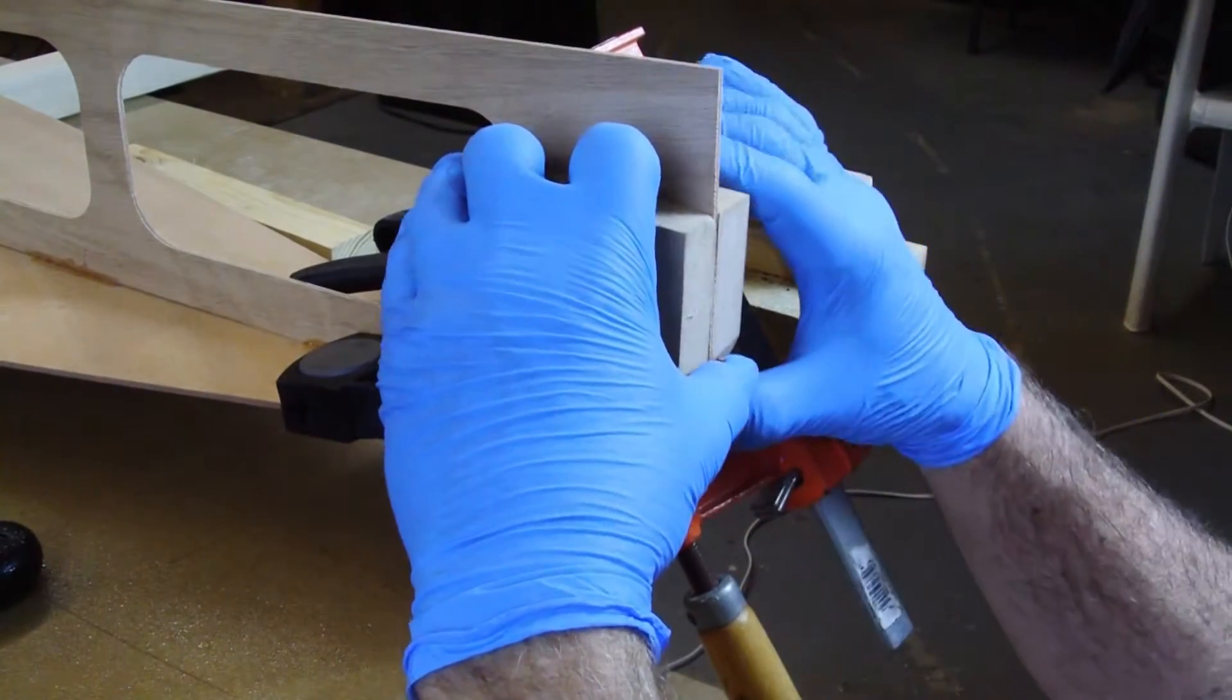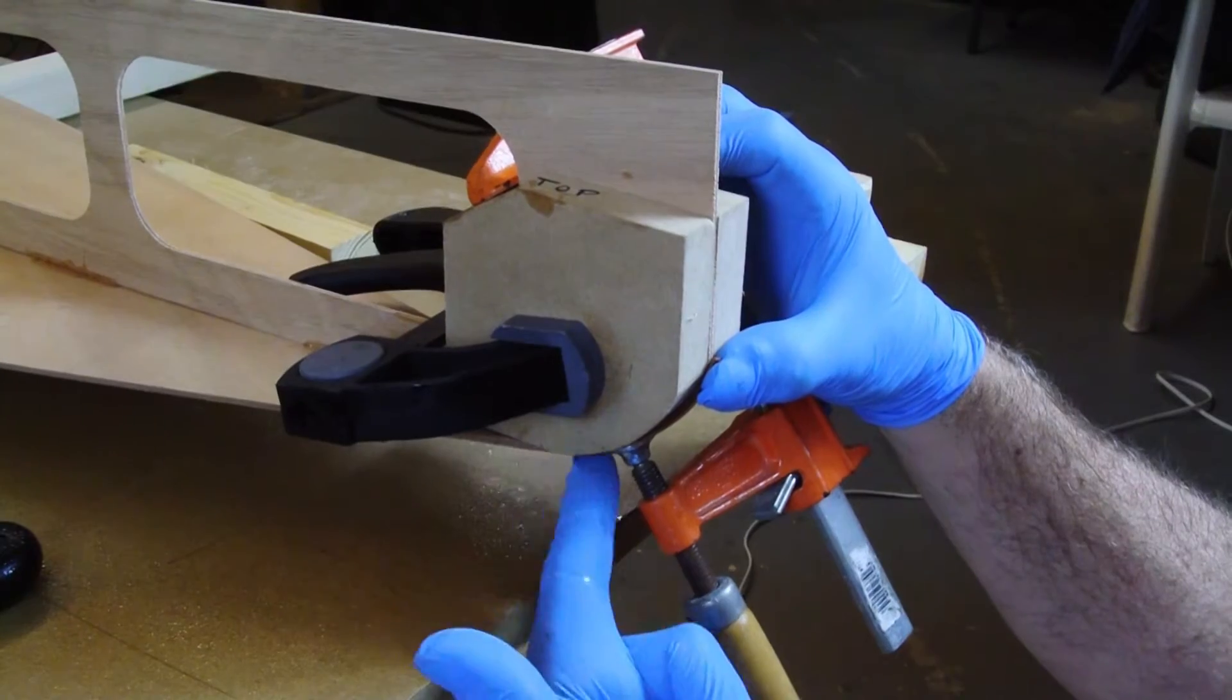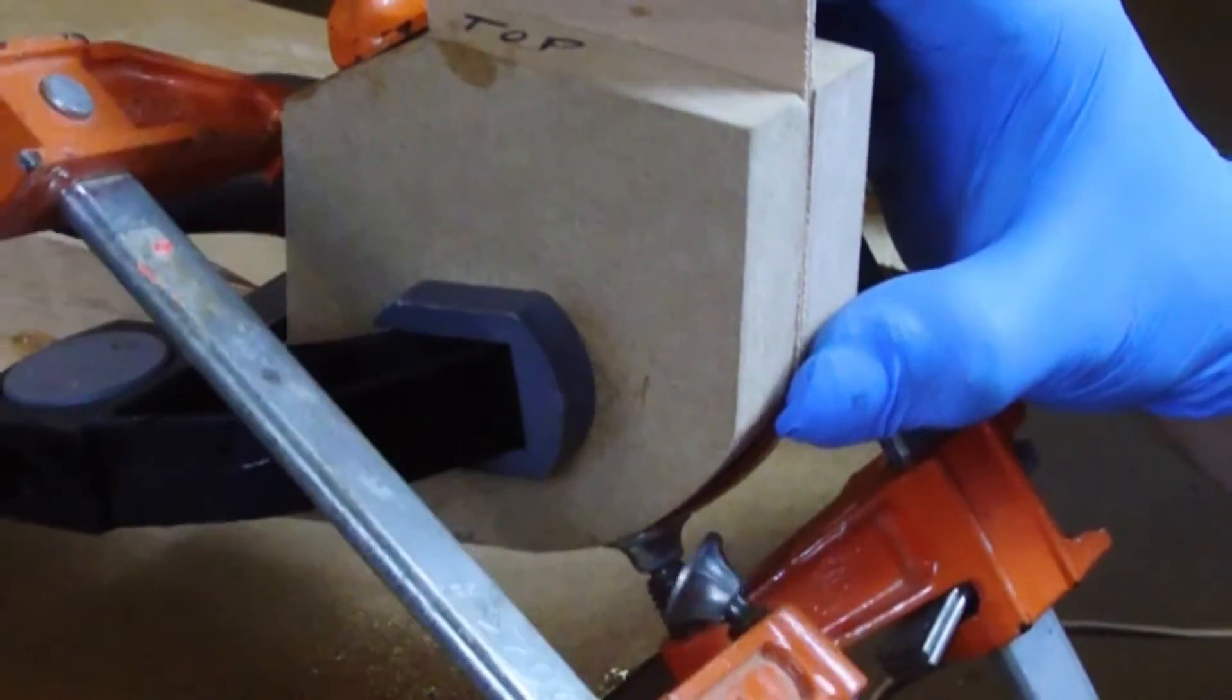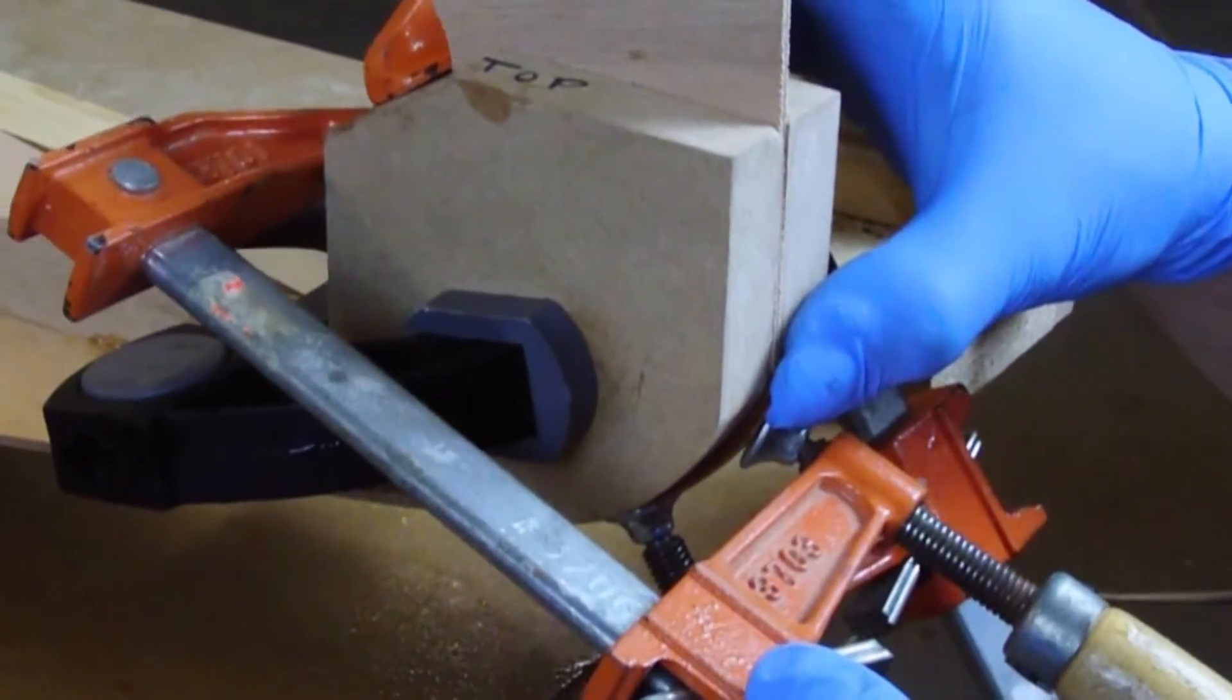One clamp should be placed so that it lifts the bottom of the curve up to the bow blocks. The second clamp can be placed near the top of the curve to pull the tip back to the blocks.